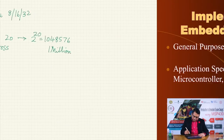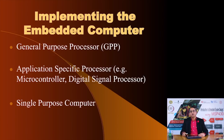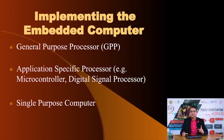On the other hand, when you choose an application-specific processor like a microcontroller, it already has a CPU, RAM, and ROM integrated on a single silicon substrate — for example, 8 kilobytes of ROM and 8 kilobytes of RAM. If that amount of memory suits your application, it makes better sense to use the microcontroller, because it reduces size, reduces cost, and improves reliability by reducing the number of components to solder.